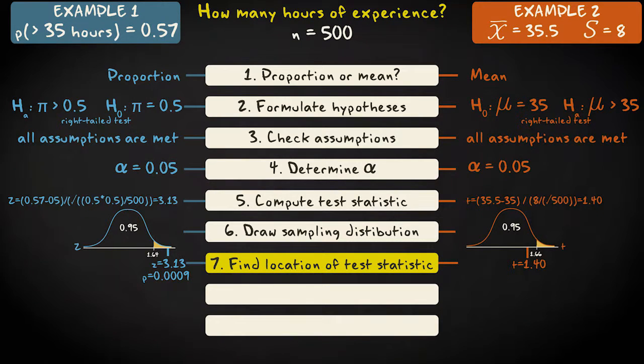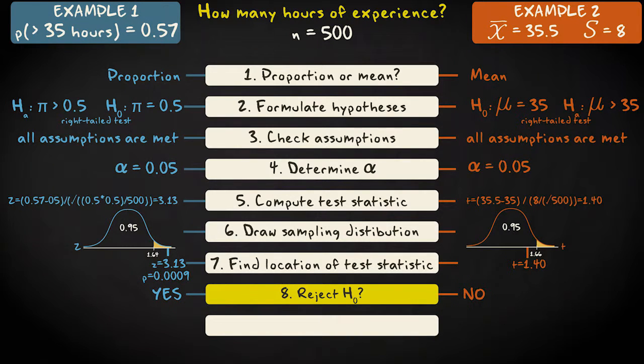Step 8: Decide if the null hypothesis should be rejected. The answer is yes when it comes to our proportion example, and no regarding our mean example.